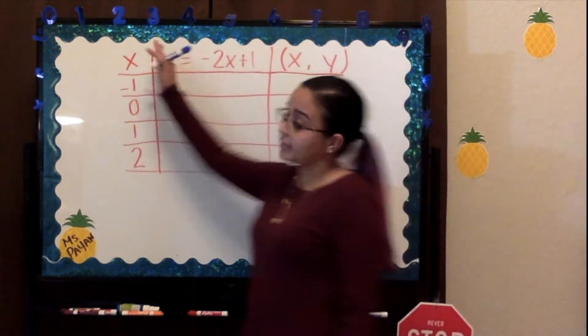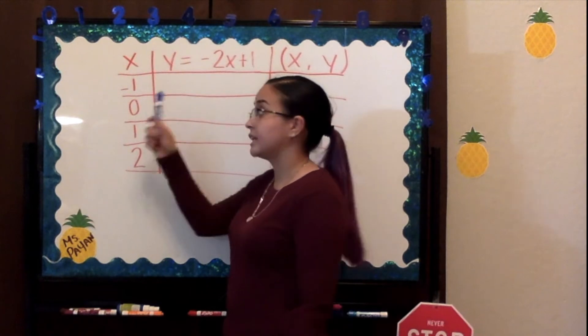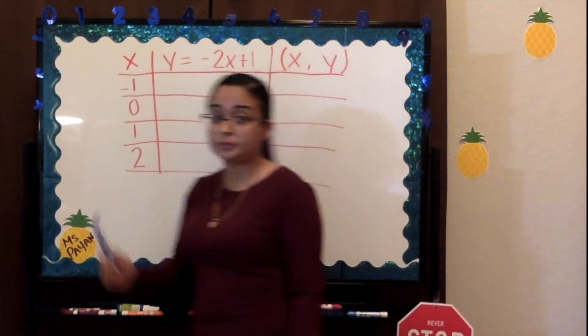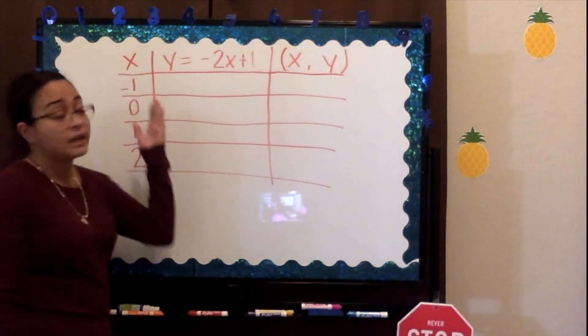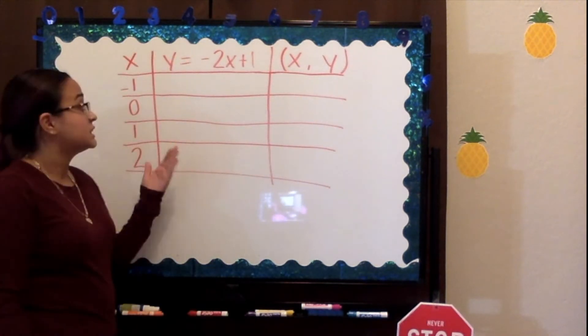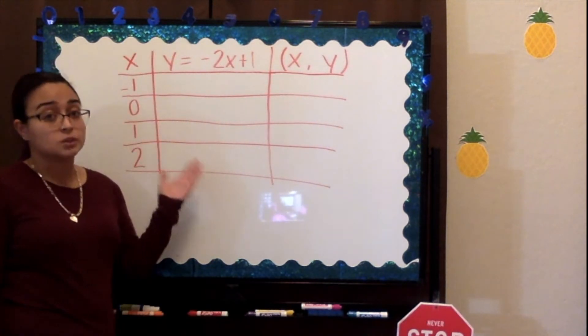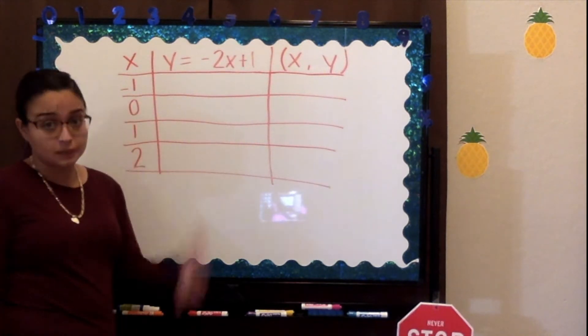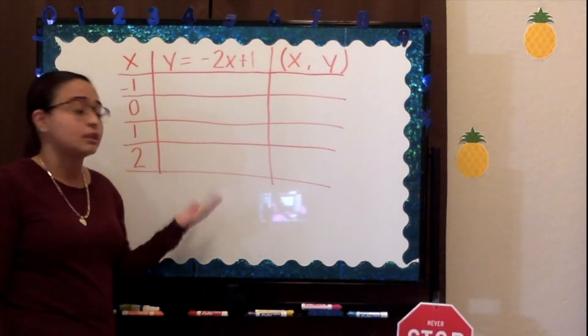First, our values for x are negative 1, 0, 1, and 2. Now for y, we have an equation which is negative 2x plus 1 equals what y is going to be. That means we have to plug it all in to be able to get our value for y.